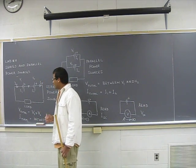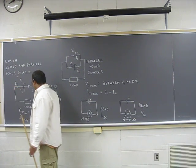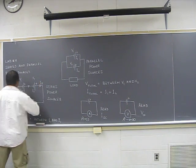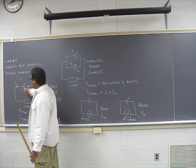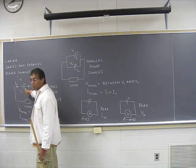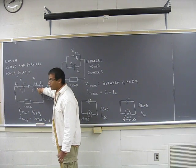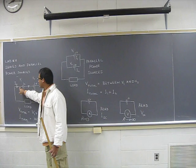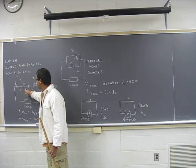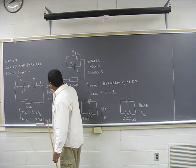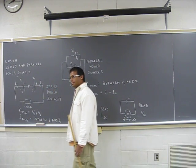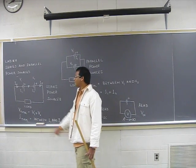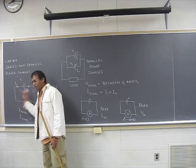Same current goes through both of these power sources - that would be a series circuit. Same principle applies if you have resistors instead of power sources. It can be either components like the resistor or power supplies. Either case, same current has to flow through each of the components.